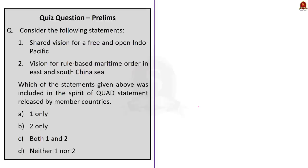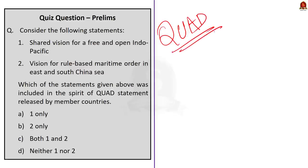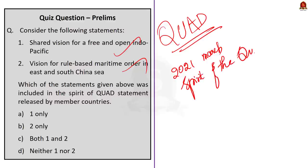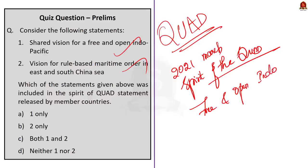Now let us look at the first prelims practice question, which is regarding the Quad discussion. Two statements are given, and you need to identify which are correct with respect to Quad. Both statements are correct — in the 2021 statement named 'The Spirit of the Quad,' the Quad members described a shared vision for a free and open Indo-Pacific, and also described a rules-based maritime order in the East and South China Seas. So the correct answer for this question is Option C: both one and two.